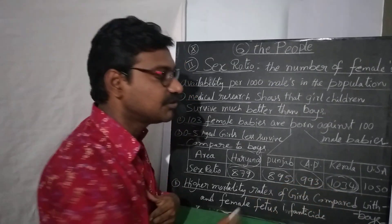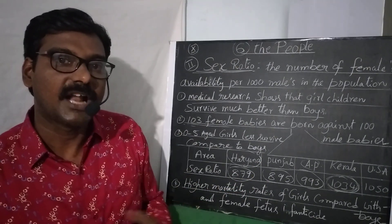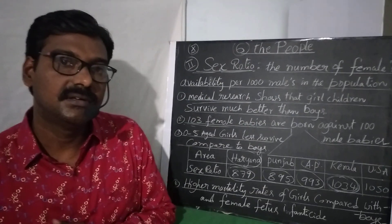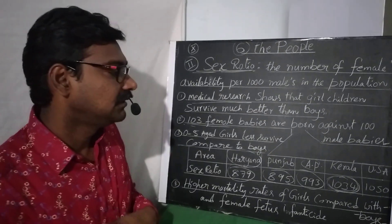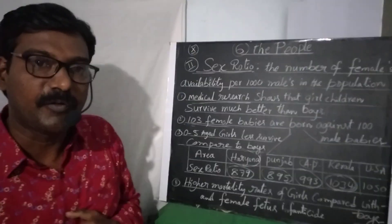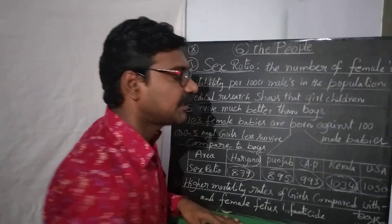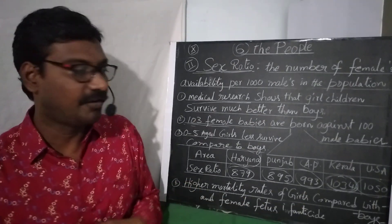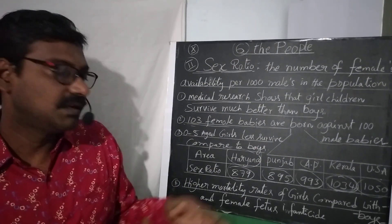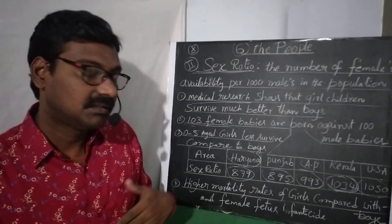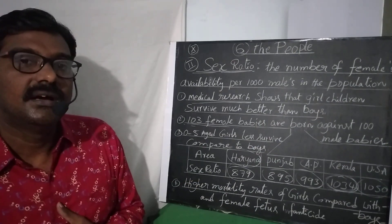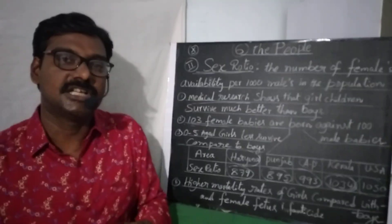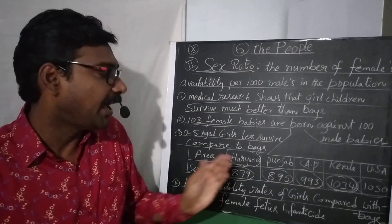In Kerala, we find 1034 females compared to 1000 males — this is a positive sex ratio. In America also, there is not much bias between girls and boys, and they show a positive sex ratio of 1050 females per 1000 males. In Andhra Pradesh, it is a little bit better compared to some other states, with 993 females per 1000 males, though some bias still exists.